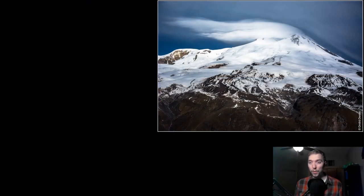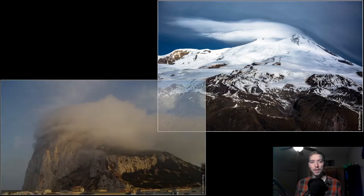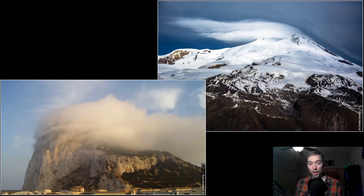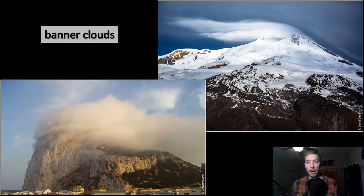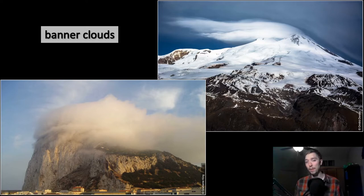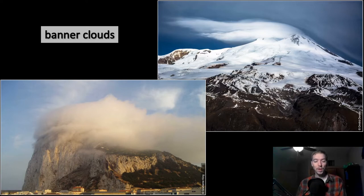Moving to a different type, these wispy clouds forming along peaks are not cap clouds or lenticular clouds — these are banner clouds. A banner cloud is a cloud plume often observed extending downwind from isolated, sharp, often pyramidal-shaped mountain peaks, even on otherwise cloud-free days. We see them in places like the Alps and the Himalayas — all those very sharp-peaked mountain chains.